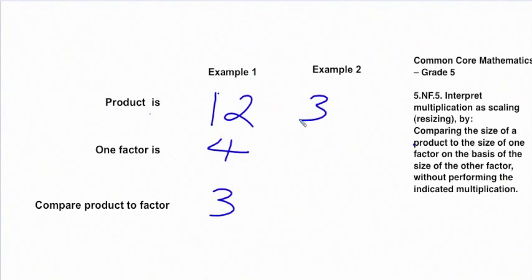If we take another example, let's say 30, and let's say one of the factors is 5, then we know that that's a 6. So then the comparison is that 30 is 6 times bigger than 5.